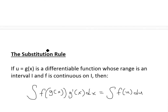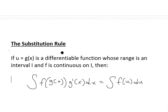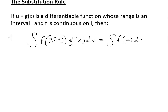Now when we look at just a general formula, we call this the substitution rule. It states: if u equals g(x) is a differentiable function whose range is an interval I, and f is continuous on I, then the integral of f(g(x)) times g′(x) dx equals the integral of f(u) du, after substituting u equals g(x).